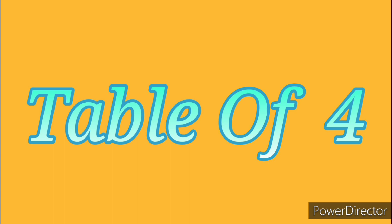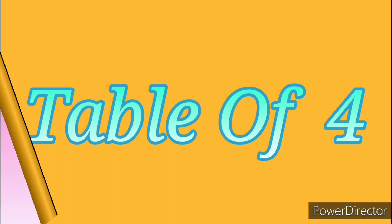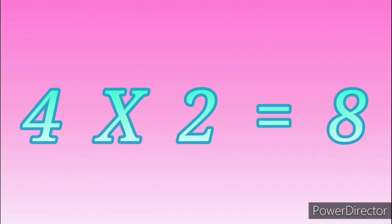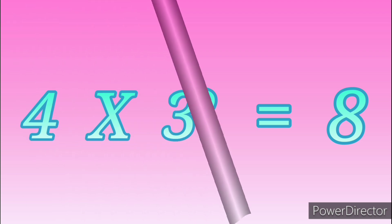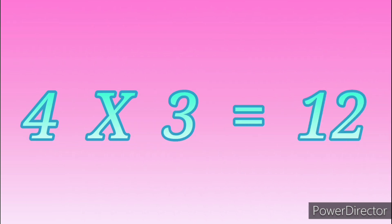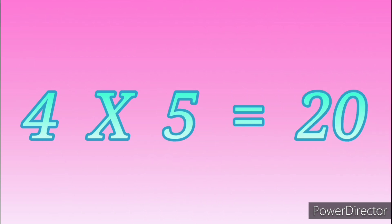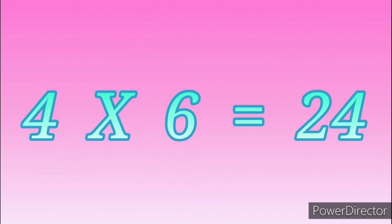Table of Four. Four-One's are four. Four-One's are four. Four-Two's are eight. Four-Two's are eight. Four-Three's are twelve. Four-Three's are twelve. Four-Four's are sixteen. Four-Four's are sixteen. Four-Five's are twenty. Four-Five's are twenty. Four-Six's are twenty-four. Four-Six's are twenty-four.